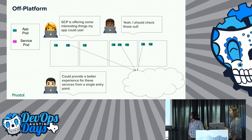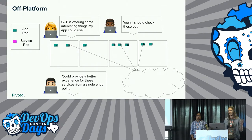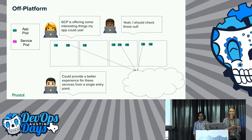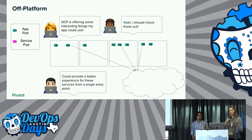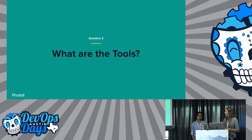Another very common pattern is off-platform services, where you're taking advantage of a cloud provider's service like DynamoDB or Google Cloud Spanner. In this circumstance, you can have your application teams owning the lifecycle and provisioning of those services through the cloud console or APIs. On the other hand, there are cases where you can have that experience available transparently through the Kubernetes-native experience and APIs that actually go out and do some of these lifecycle operations for you. That's a quick run-through of the different patterns.